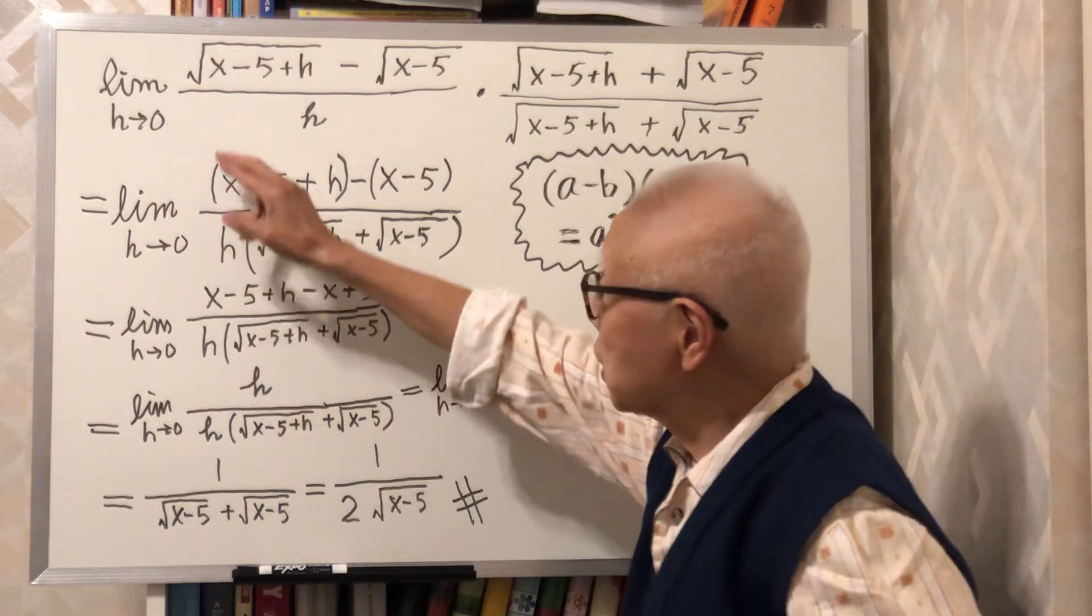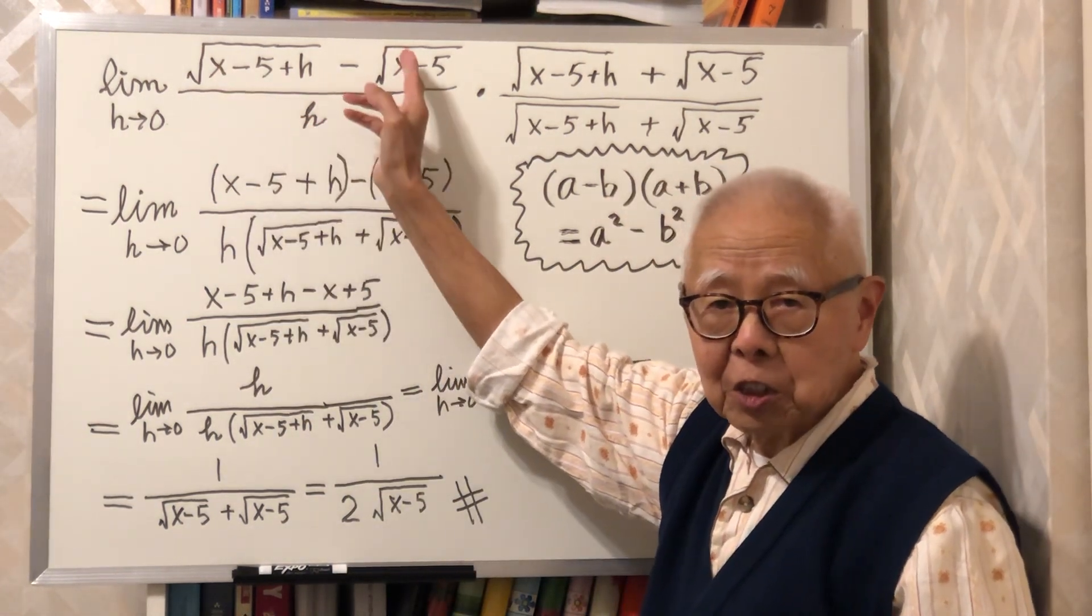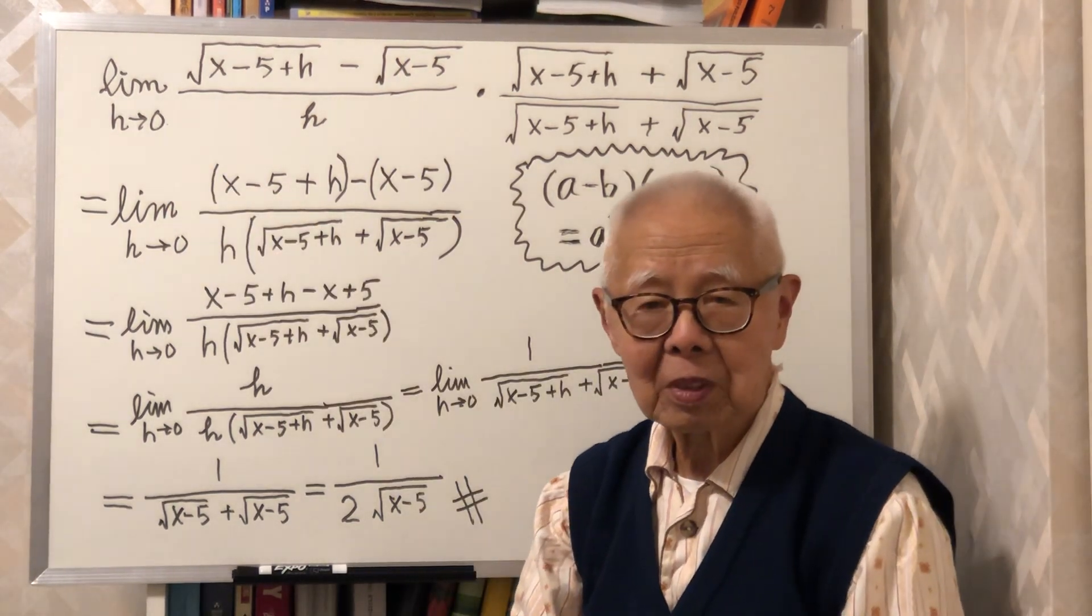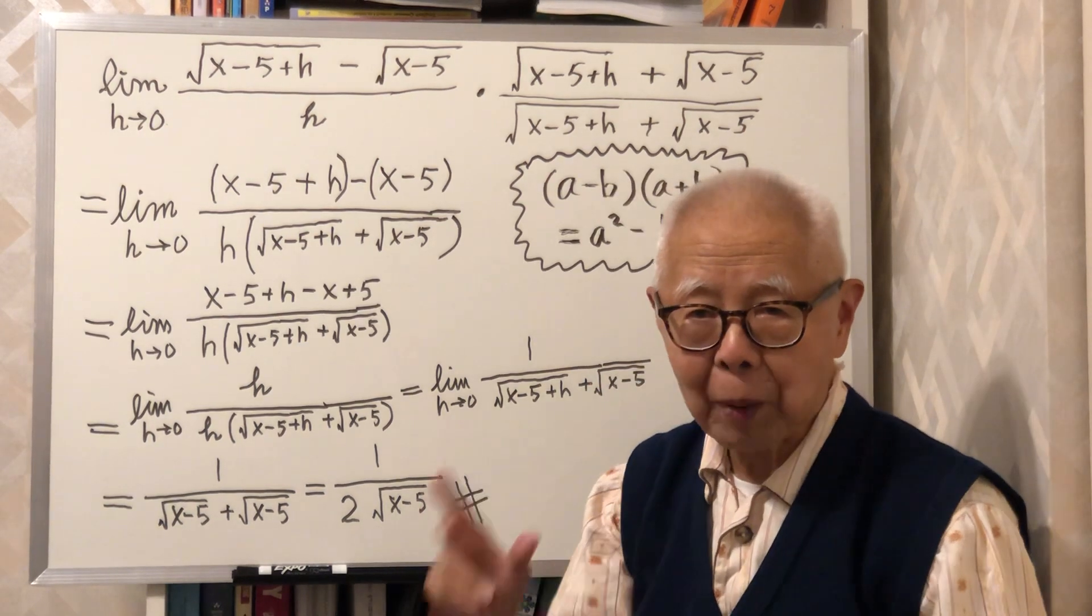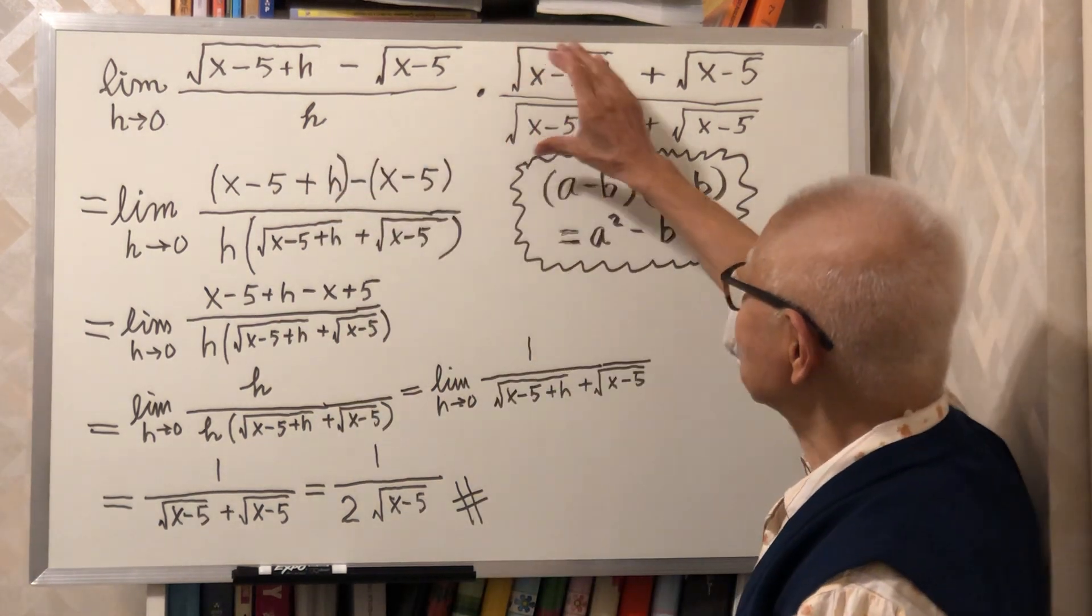When you see a square root minus another square root and you want to take the limit, the usual way is to multiply this factor.